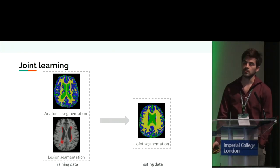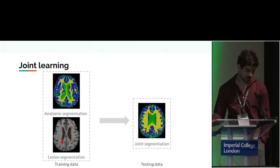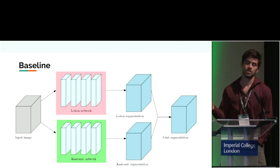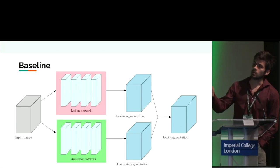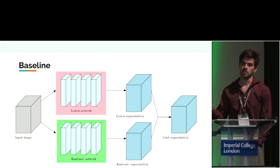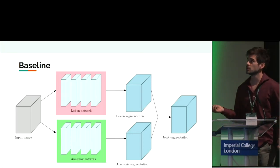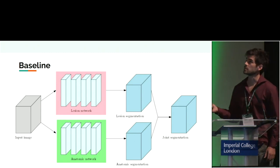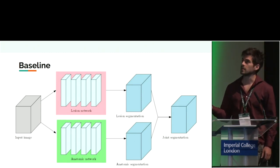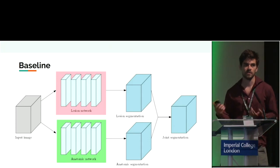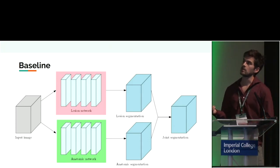I'm going to present two solutions we came up with. The first one is very simple: you train one network on an anatomical dataset and another network on the lesion dataset. When you get a new image, you compute the anatomical segmentation and the lesion segmentation, paste the lesions on top of the anatomical segmentation, and you get your result. This works really well because each network only performs one task.